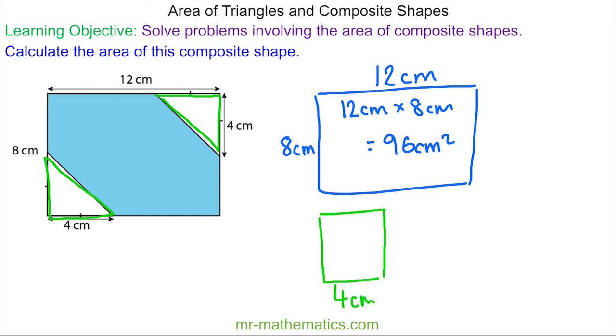The length and width are both 4 centimeters and they join along the diagonal here. So the area of this square is 4 centimeters multiplied by itself, which is 16 centimeters squared.